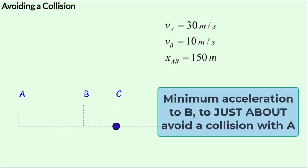Remember, A continues to travel at 30 meters per second, whereas B has an initial velocity of 10 meters per second. Besides, we would be accelerating it such that a collision with A is just about avoided.